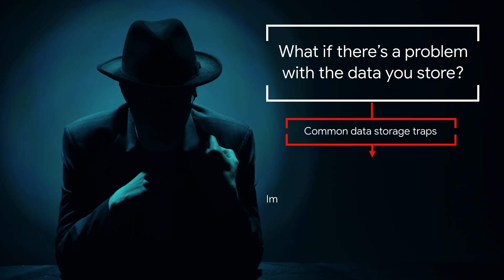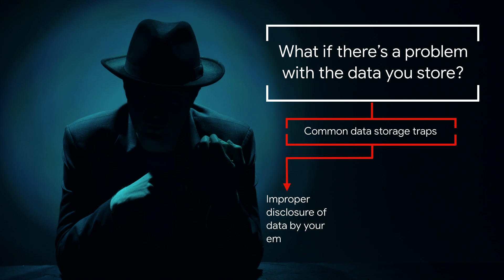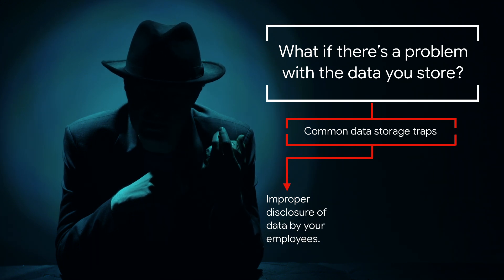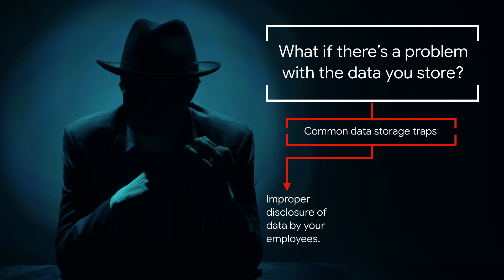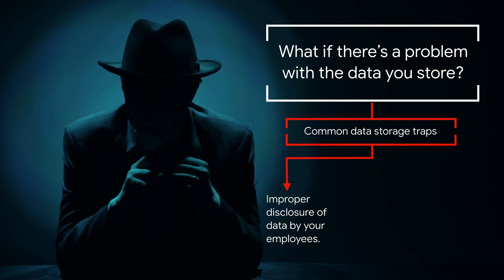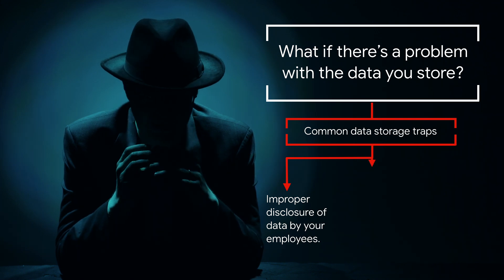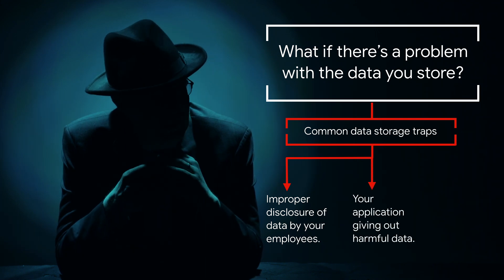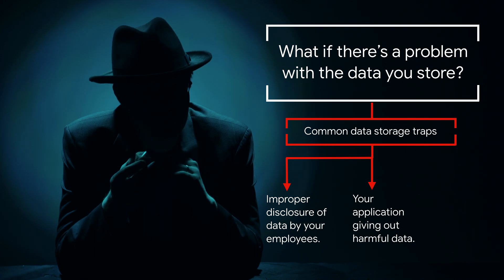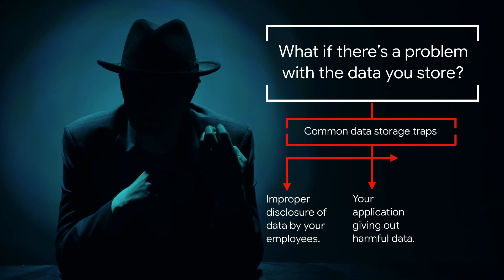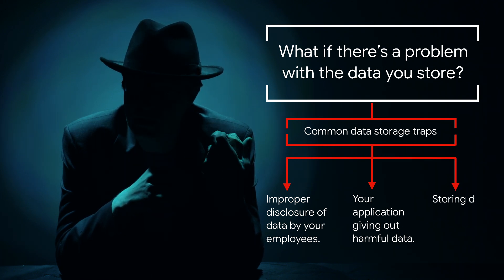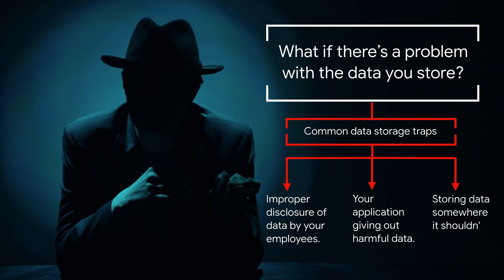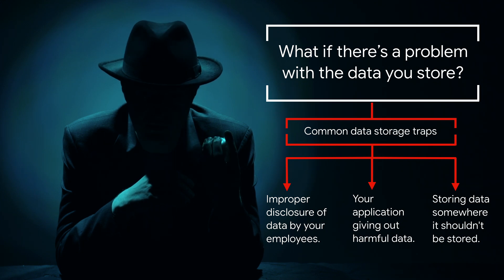Improper disclosure of your info by employees — imagine accidentally sending an email containing credit card or social security numbers. Your application could disseminate harmful data, sharing phishing URLs or malware. Or data could be stored somewhere without proper security protocols in place. What can you do to stop that?